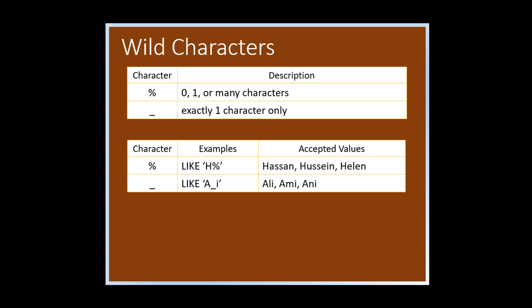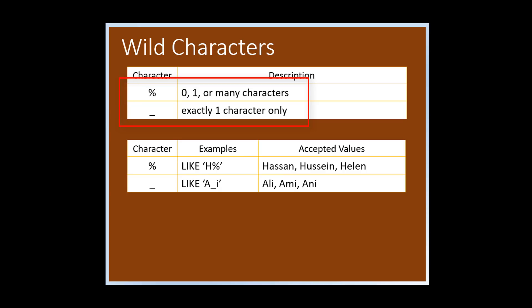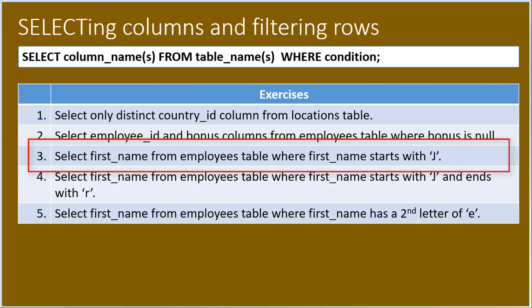Using LIKE deals with pattern matching. The two wildcard characters we can use are percent (%) and underscore (_). Percent may represent zero, one, or many characters. On the other hand, underscore represents only one character.